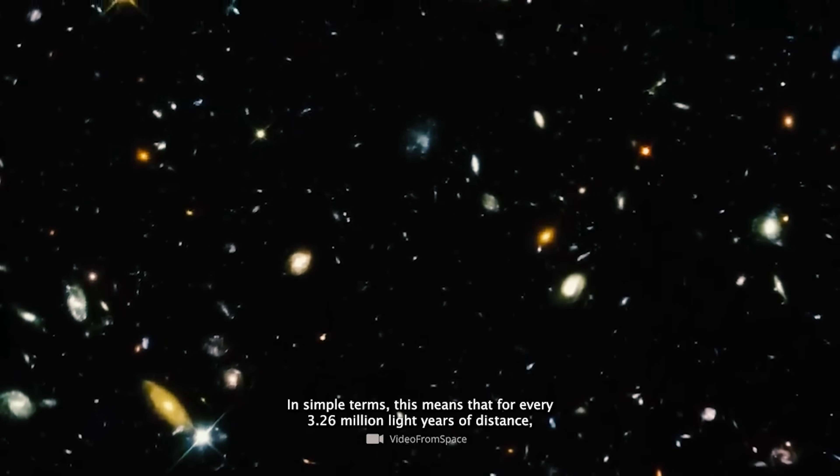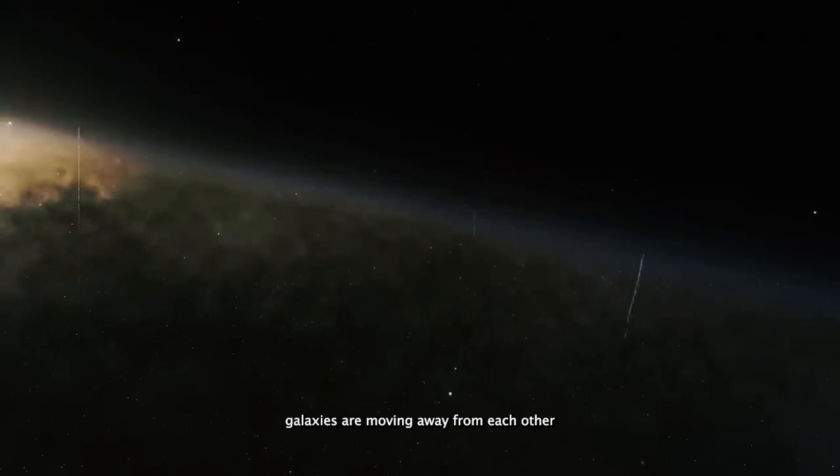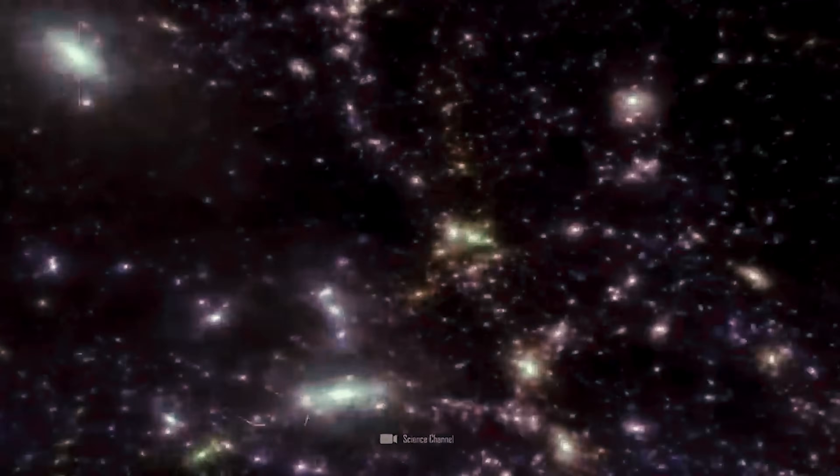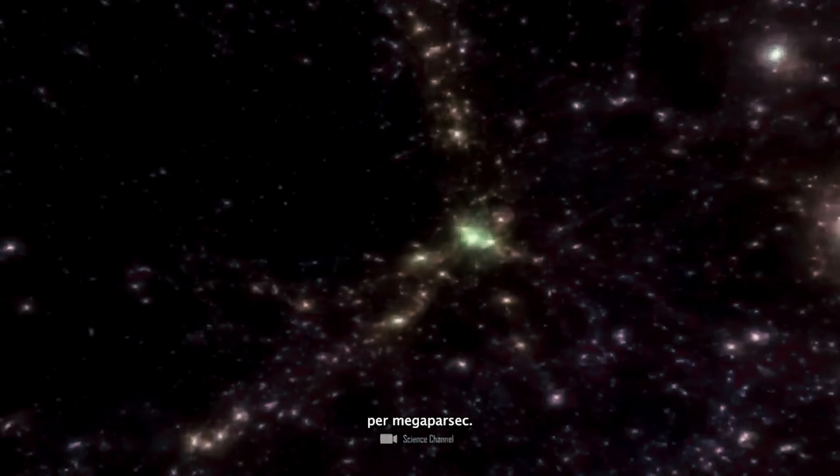In simple terms, this means that for every 3.26 million light-years of distance, galaxies are moving away from each other 67 km per second faster. To put it another way, that's roughly 244,000 km per hour per megaparsec.